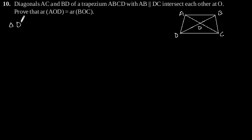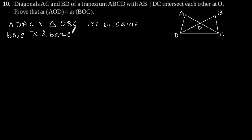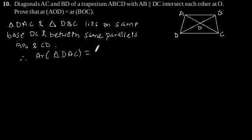Triangle DAC and triangle DBC lie on the same base between the same parallels AB and CD. Therefore, the area of triangle DAC is equal to the area of triangle DBC.